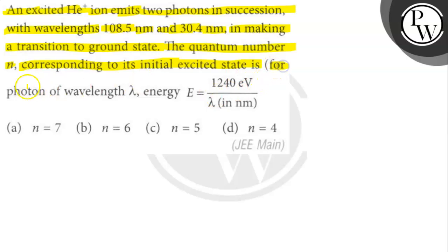Let's find out. For photon of wavelength lambda, energy E equals to 1240 eV by lambda in nanometer.